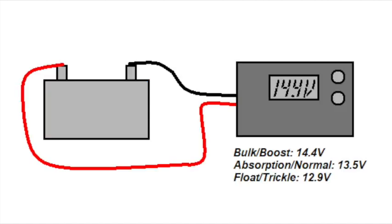If you recall from video one, a typical smart charger has three states: bulk, absorption and float. Each of these states has a different voltage associated with it.